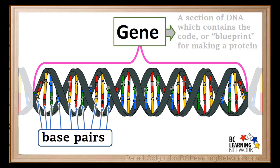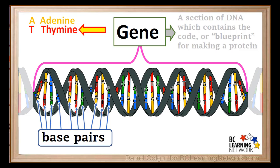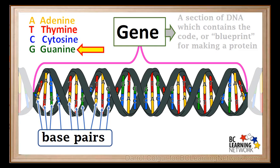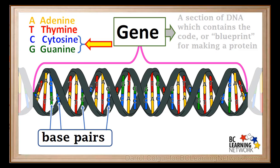The base pairs have names that these letters stand for. A stands for a base called adenine. T stands for a base called thymine. C stands for a base called cytosine, and G stands for a base called guanine. If you look carefully at the diagram, you'll notice that adenine always pairs up with thymine, and cytosine always pairs up with guanine. These pairing rules are always followed by DNA.